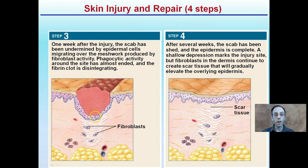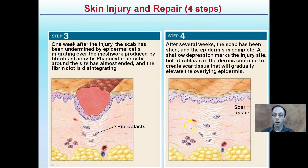After several weeks, for a more severe cut, the scab has been shed naturally — it falls off, often feeling itchy as the body works to remove it. The epidermis is now complete, though a shallow depression marks the injury site. Fibroblasts in the dermis continue to create scar tissue that will gradually elevate the overlying epidermis. For the most part, normal function has returned to the skin, even though a mark may remain. So remember: don't pick your scabs — let the body go through this stepwise process to heal itself for long-term repair.